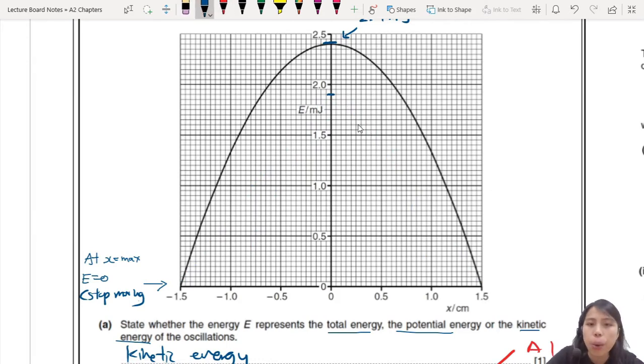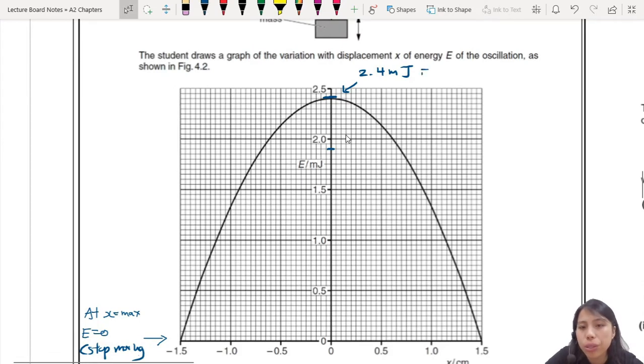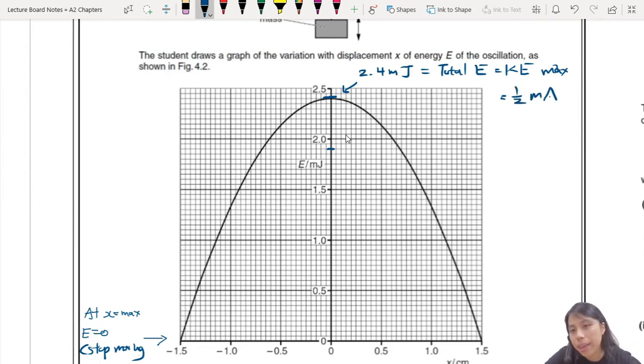So how we can think of it is, what is this value up here? These 2.4 megajoules is what we call the total energy, which happens to also be the maximum kinetic energy. It's all the same. And we know an equation for that. We know that that is going to be half M A omega squared. So that is the formula for that. So if your energy has decreased, they're asking you, how will the amplitude change? Will it decrease, increase or not?